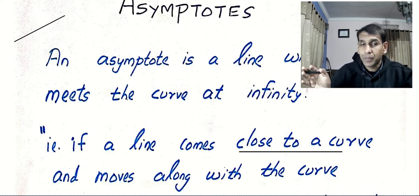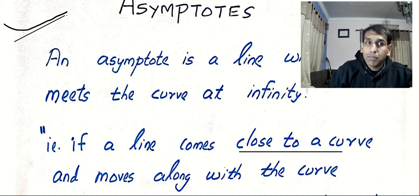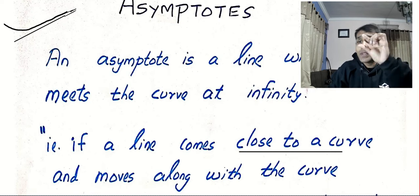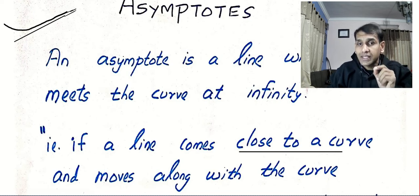What is an asymptote? It is a line and it will have a relation with the curve. Suppose a curve comes nearer and nearer and nearer to a line, but the curve is not able to meet that line and they both move forever and ever, and the distance between the curve and the line becomes smaller and smaller and smaller — then we call that line an asymptote.